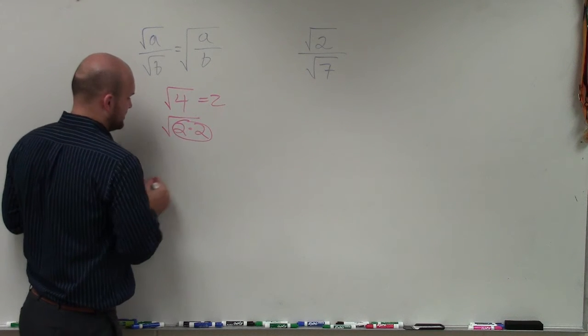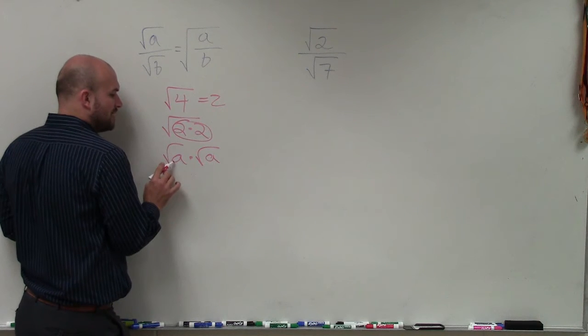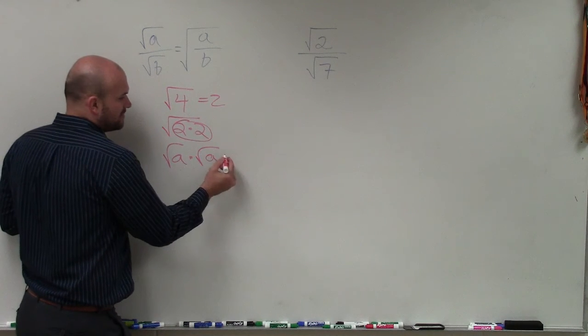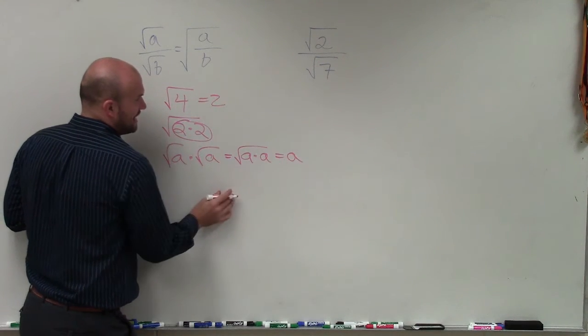And the other important thing to remember is the properties of radicals state that when I have the square root of a number times the square root of a number, that equals the square root of the product of those numbers, which would just be a.